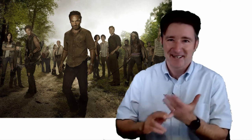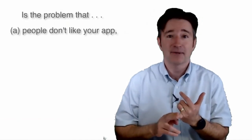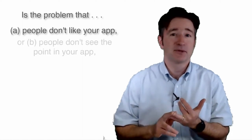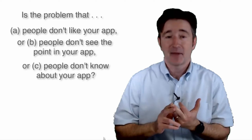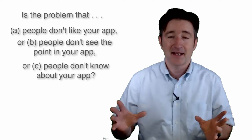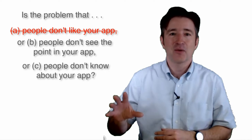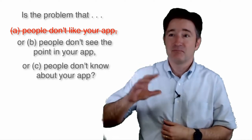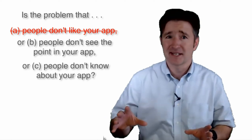Like if you watch The Walking Dead, Rick Grimes always asks the three questions. I asked: is the problem that A, people hate your app; is it B, that people don't see the point in your app; or is it C, they don't know about your app? And these are the three reasons why people don't use your app. More often than not it's never A — it's always B or C, and more often than not it's C. So let's go through these again.